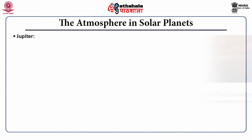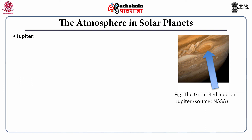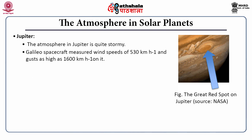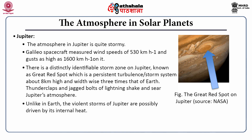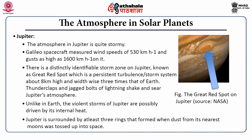The next planet of the solar system is Jupiter. It is a gas giant and its atmosphere is quite stormy. There is a distinctly identifiable storm zone on Jupiter known as the Great Red Spot — a permanent turbulent system about 8 kilometers high and about 3 times the width of Earth. Thunder claps and bolts of lightning shake Jupiter's atmosphere all the time. Unlike on Earth, the violent storms of Jupiter are possibly driven by internal heat. Jupiter is surrounded by at least 3 rings that formed when dust from its nearest satellites was tossed up into space.